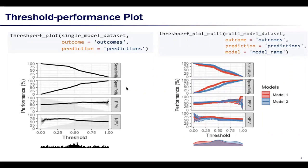We present four metrics — sensitivity, specificity, positive predictive value, and negative predictive value — across a range of probability thresholds on the x-axis.